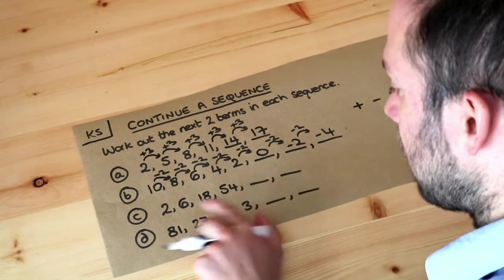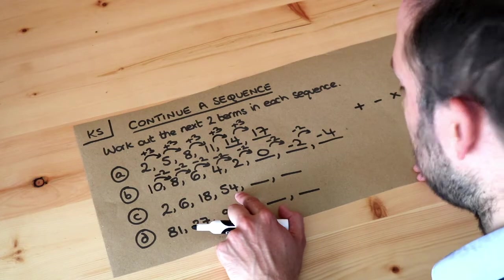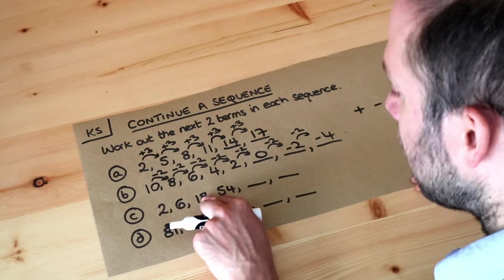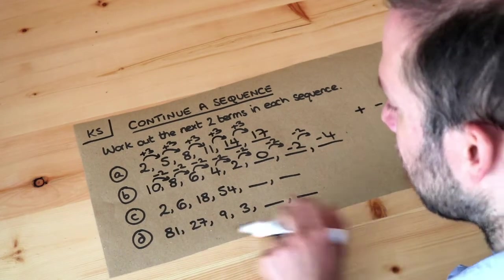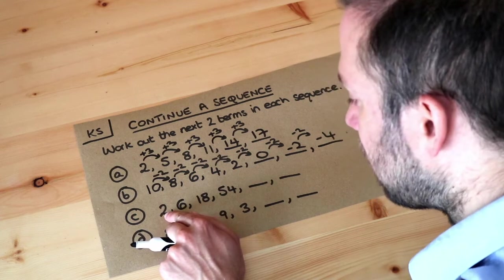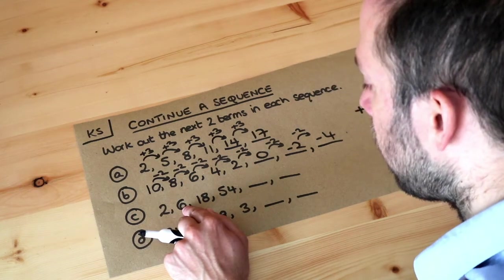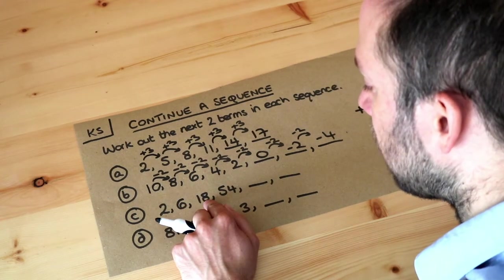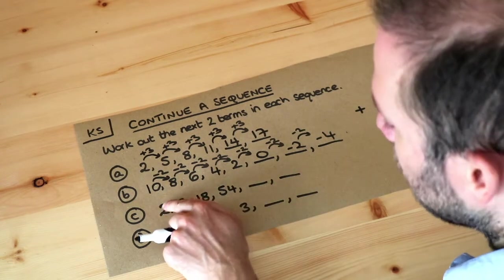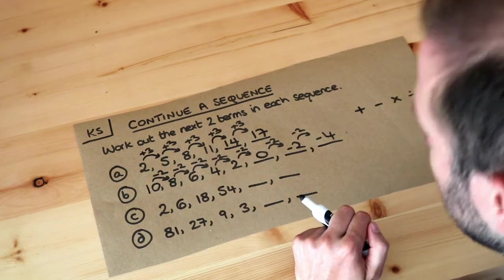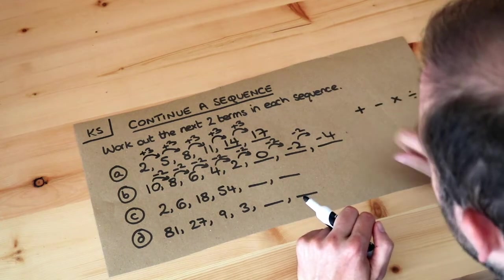What about the next one? 2, 6, 18, 54. Well the numbers are getting bigger, so it could be that we're adding the same number each time. But let's look. Can you see 2 to 6, we're adding 4, but 6 to 18, we're adding 12. So we didn't add the same number. We added 4 first, but then 12. That's not the same. So it's not going to be that.